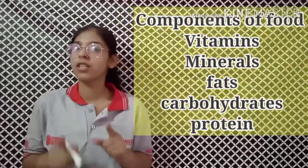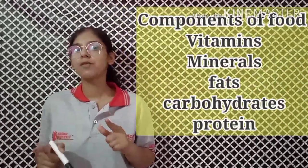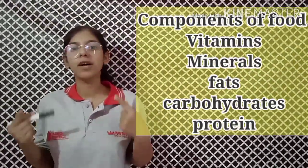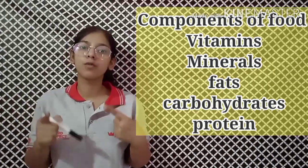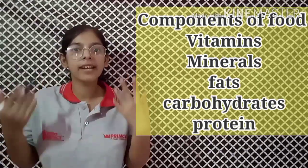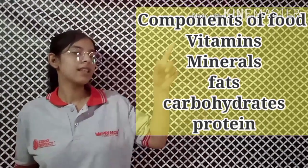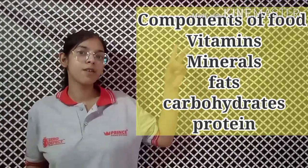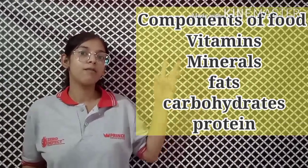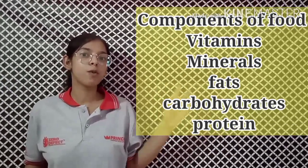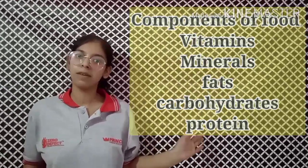The next topic is components of food. Components of food are things that are directly found in our body. These include carbohydrates, fat, vitamins, proteins, and minerals.